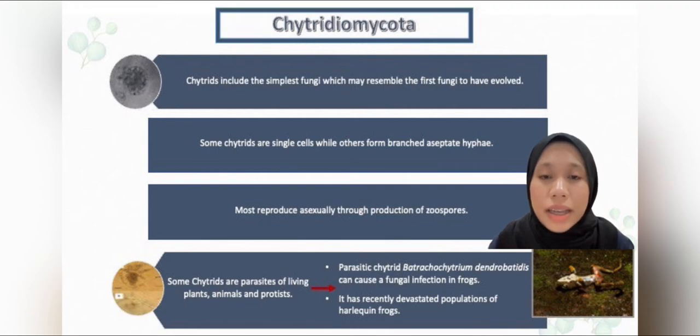Next is Chytridiomycota. These chytrids include the simplest fungi which may resemble the first fungi to have evolved. Some chytrids are single cells while others form branched septate hyphae. Most of this fungi phylum reproduce asexually through production of zoospores. Chytrids also play a role in decay and digestion of dead aquatic organisms, but some are parasites of living plants, animals, and protists.